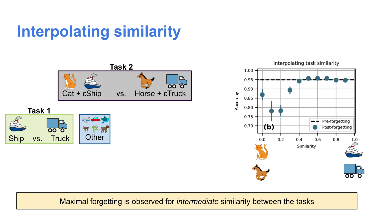When epsilon is zero, we have the pure animals task. When epsilon is one, we have purely the vehicles task, meaning there's no difference between task one and task two. In this setup, when we look at how forgetting varies with epsilon, there's clearly a regime where epsilon is roughly 0.2 that causes maximal forgetting.